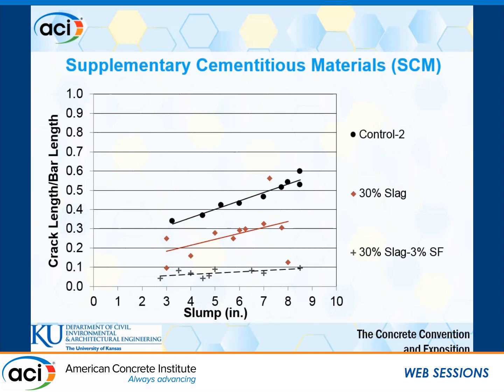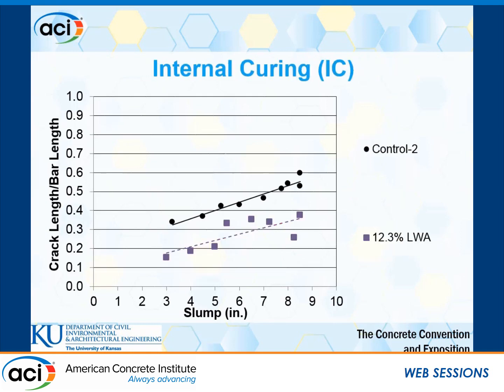The third technology is supplementary cementitious materials (SCMs). SCMs reduce settlement cracking because the slag and silica fume used in this study were finer than cement, giving extra surface area which reduces bleeding. Adding 30% slag to the concrete produced a reduction in settlement cracking, and further adding 3% silica fume produced another reduction. Internal curing with saturated lightweight aggregate also works: when water bleeds to the surface, the absorbed water in the lightweight aggregate is drawn out, reducing the rate of settlement. Adding lightweight aggregate reduced settlement cracking.